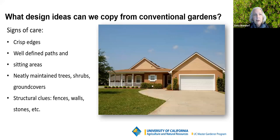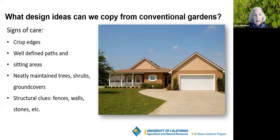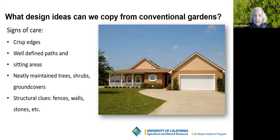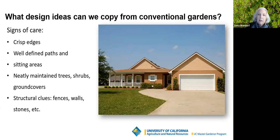In a typical suburban yard, we want it to feel like people are taking care of it — intentional. Signs of care include crisp edges, well-defined paths and sitting areas, neatly maintained trees, shrubs, and ground covers, pruned and with dead wood removed. Structural clues — ways to contain the space — give it a frame. No matter how wild a garden looks, if you put a fence or a little wall around it, it's going to look more intentional and feel like a garden instead of a wild space.